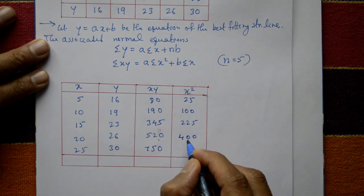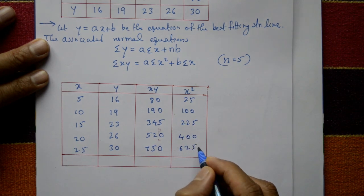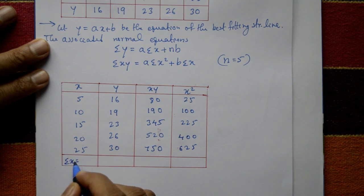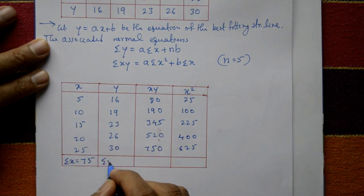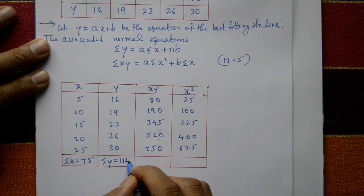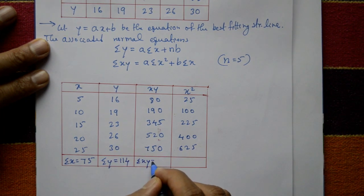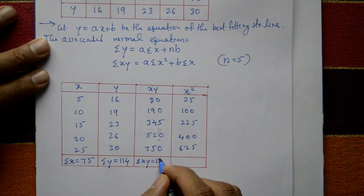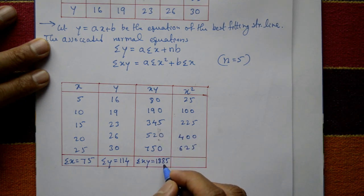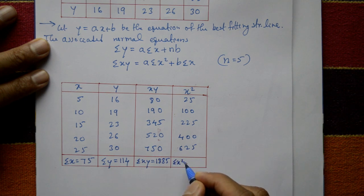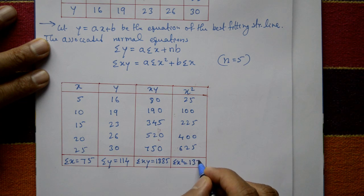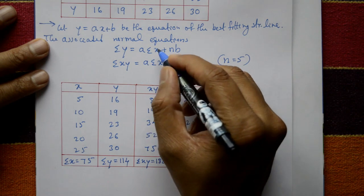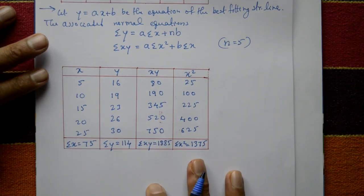Taking the summations: summation x = 75, summation y = 114, summation xy = 1885, and summation x² = 1375. These values are now substituted into the normal equations.